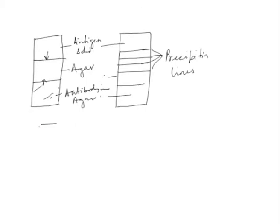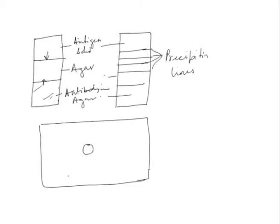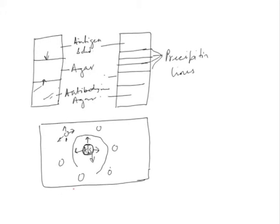Double immunodiffusion can also be done in two dimensions on a microscopic slide with agar. A central hole is punched for the antiserum, and slots for placing antigens at different concentrations are made around it. Both antigens and antibodies diffuse in all directions. At equivalence, visible precipitin lines are formed. The distance of the precipitin line from the antigen well depends on antigen concentration.